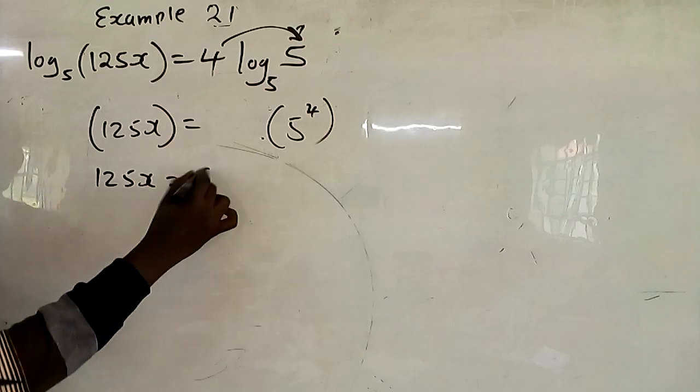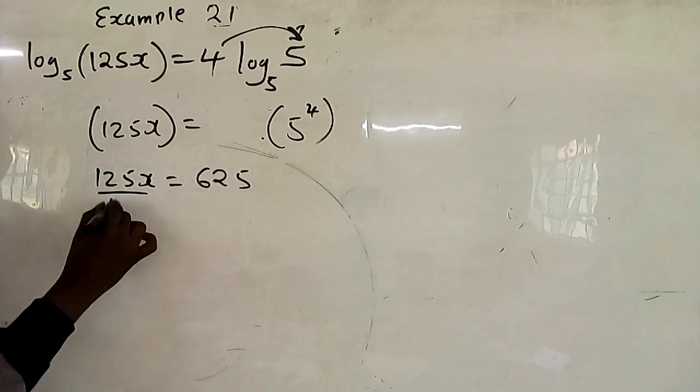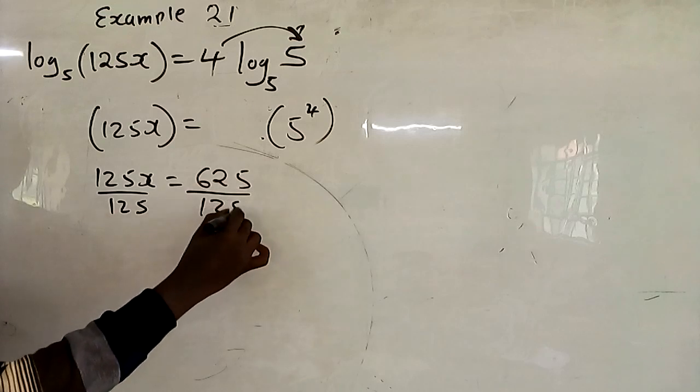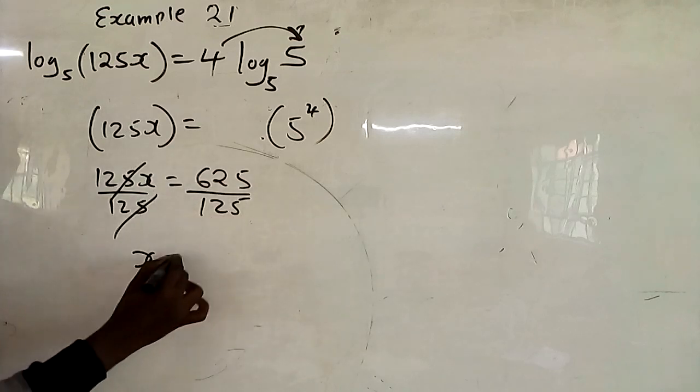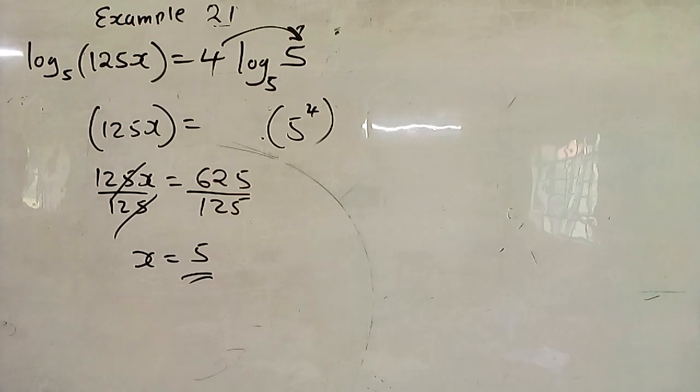So you divide by 125, both sides to get your x is 5. So you can actually solve a logarithmic equation.